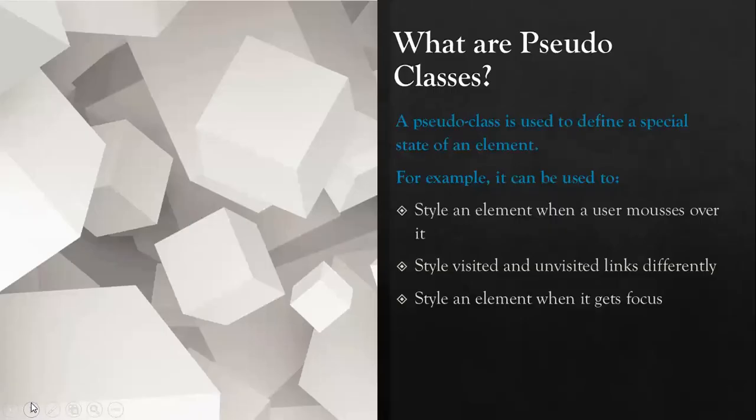What are pseudo-classes? When we say pseudo-classes, it is used to define a special state of an element. For example, it can be used to style an element when a user mouses over it. We can also use pseudo-classes if we want to style visited and unvisited links differently. We can also use pseudo-classes if we want to style an element when it gets focused — meaning we can improve our element every time we point our mouse on it, or put a style when we want some text in our website to be focused or emphasized.